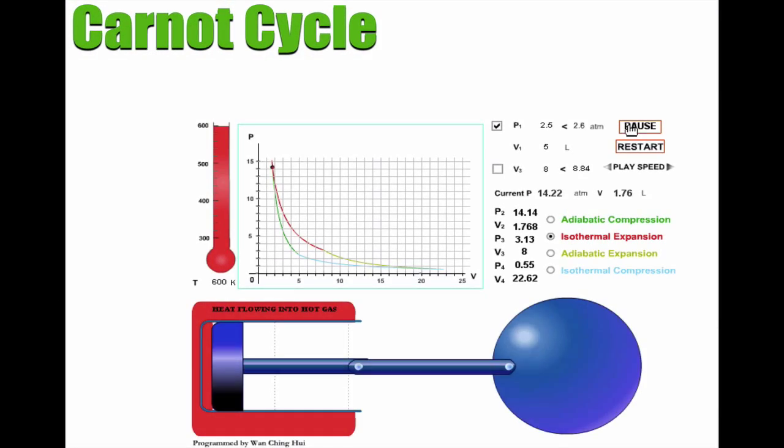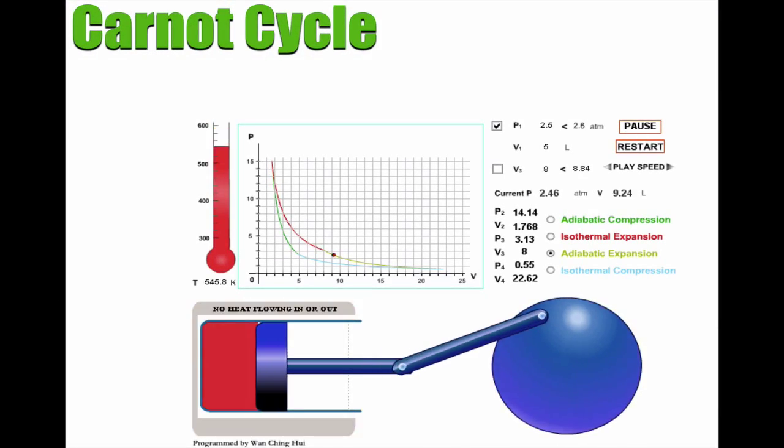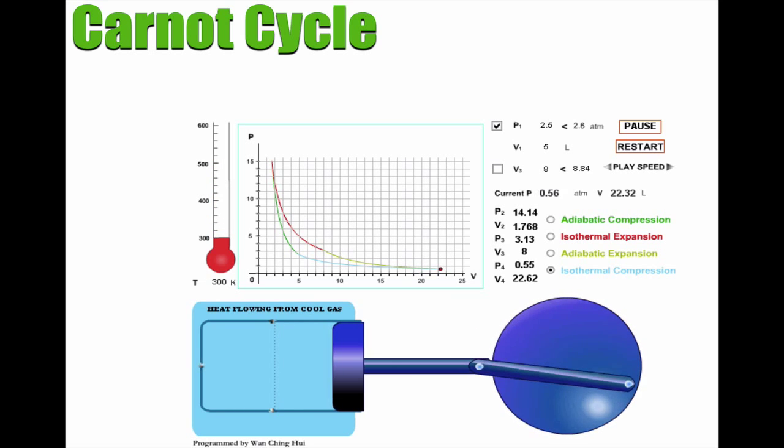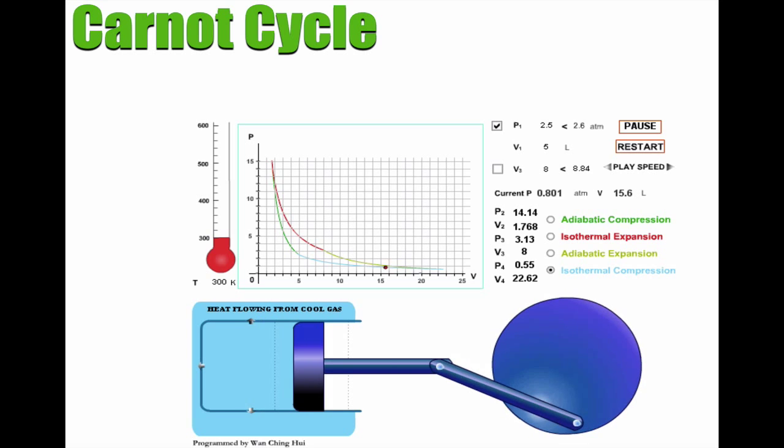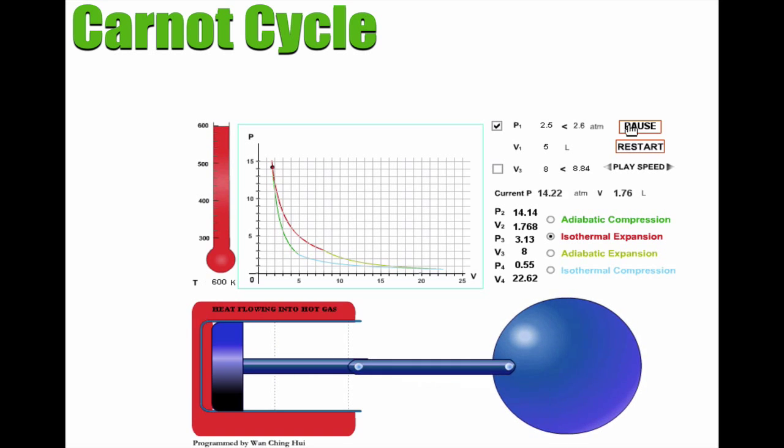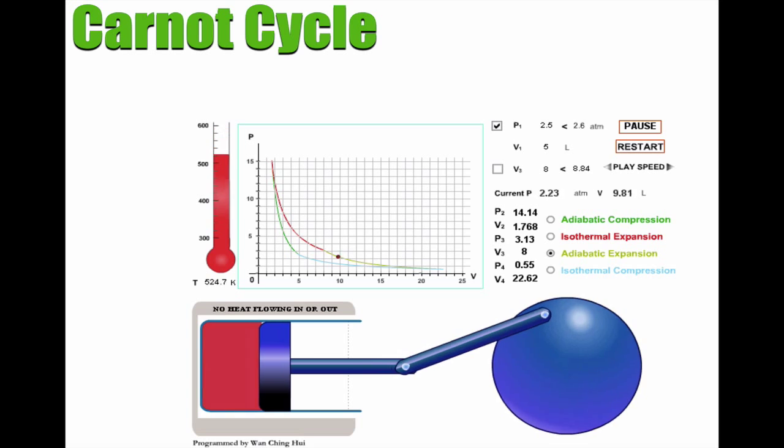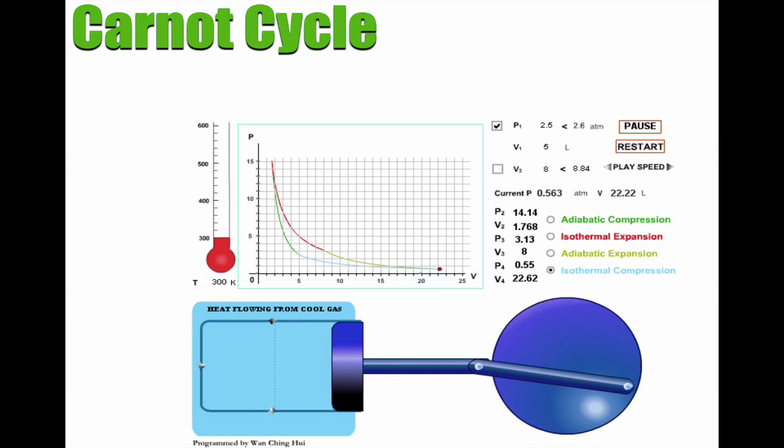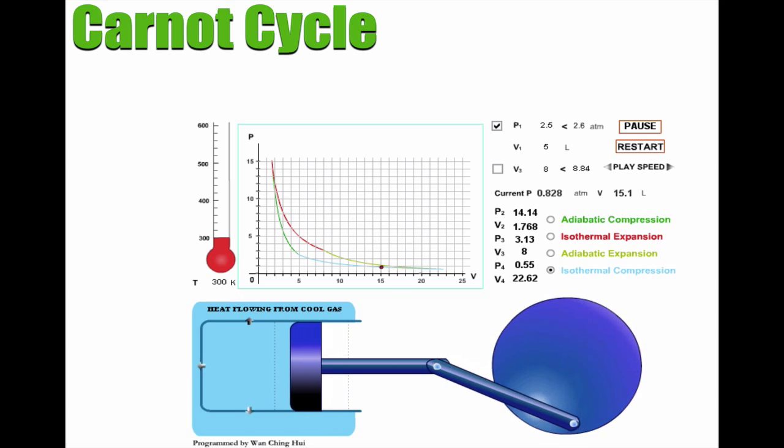So let's take a look at the Carnot cycle itself. Here's a little animation to show you what's going on with the piston attached to a cam, so you can see what kind of work is being done. Here I have energy flowing in, heating up the gas, and then I have an insulator letting it expand. And then the energy flows out, and then I'll put another insulator to let it finish compressing.